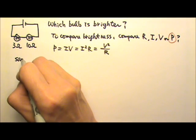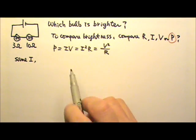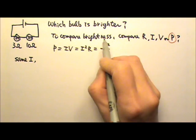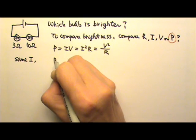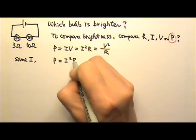That means out of these three equations, the easiest one to use would be this one. Power equals to I squared R.